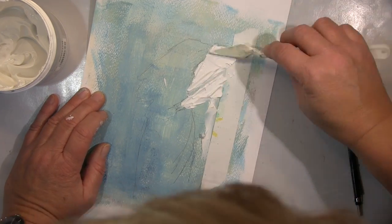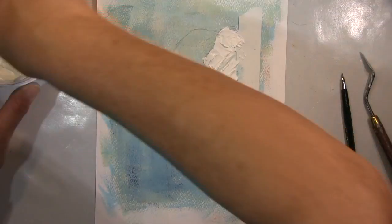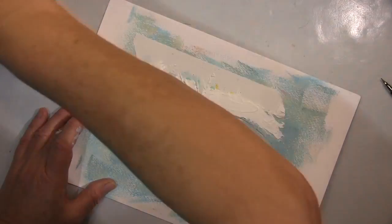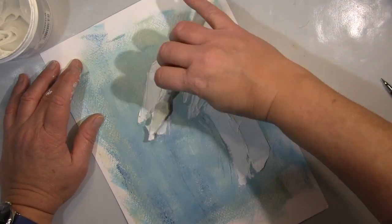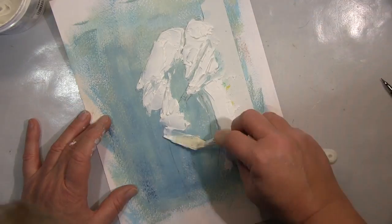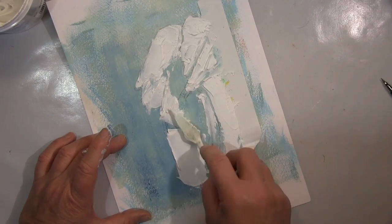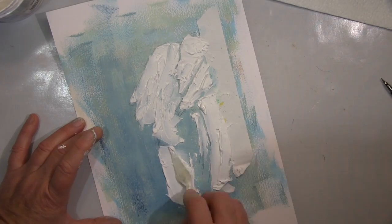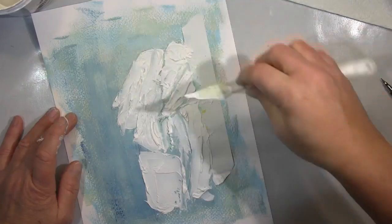But at the end, it's a very abstract elephant. It worked somehow for me. So here I use the Crackle Paste with a palette knife and put a good amount of Crackle Paste down. And then I define it a bit better with a small metal palette knife.